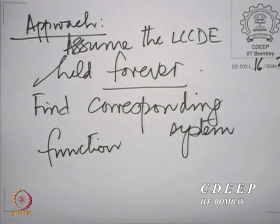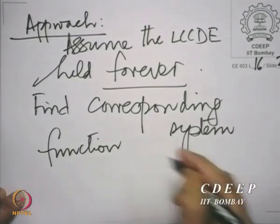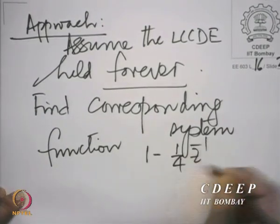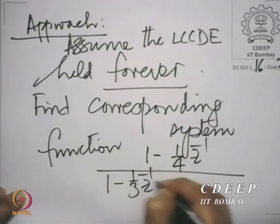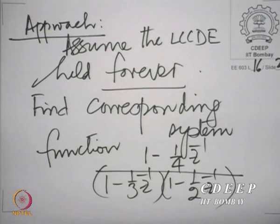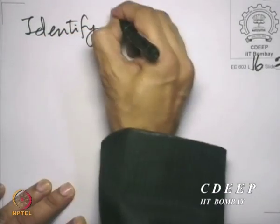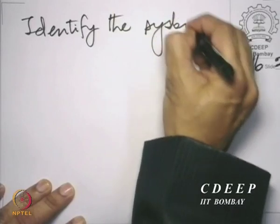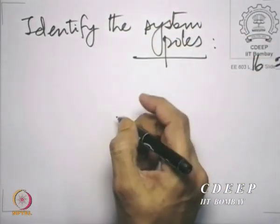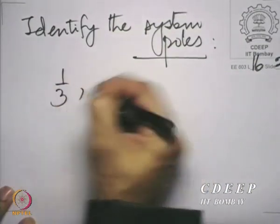What do we mean by the corresponding system function? The ratio of Y(z) to X(z). The corresponding system function here is [1 − (1/4)z⁻¹] divided by [1 − (1/3)z⁻¹][1 − (1/2)z⁻¹]. We then identify what are called the system poles. Here they are at one-third and one-half.